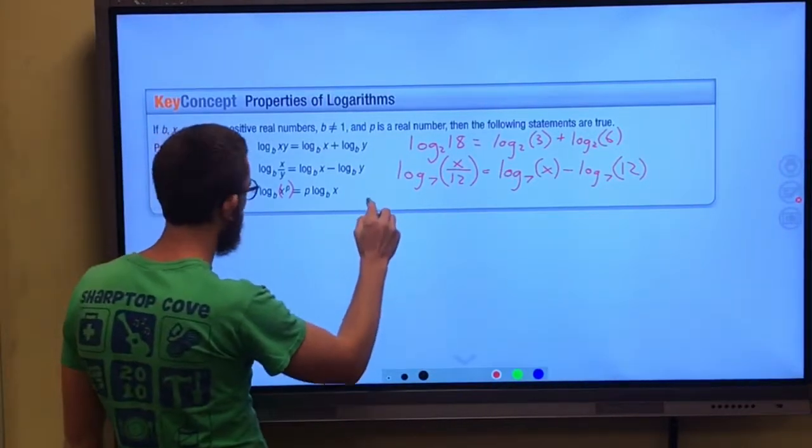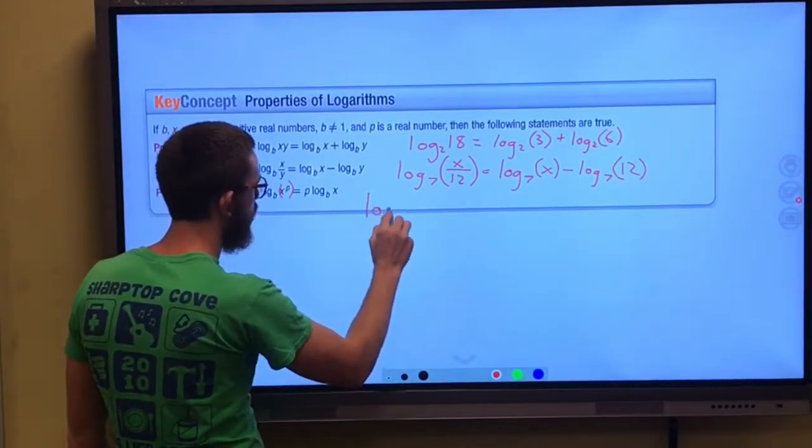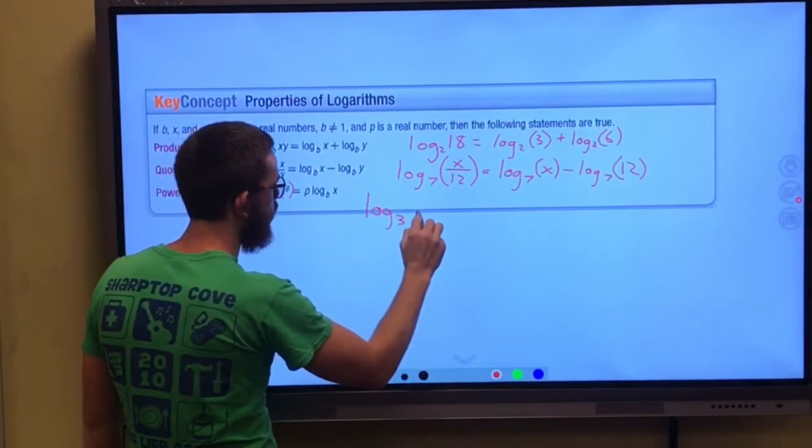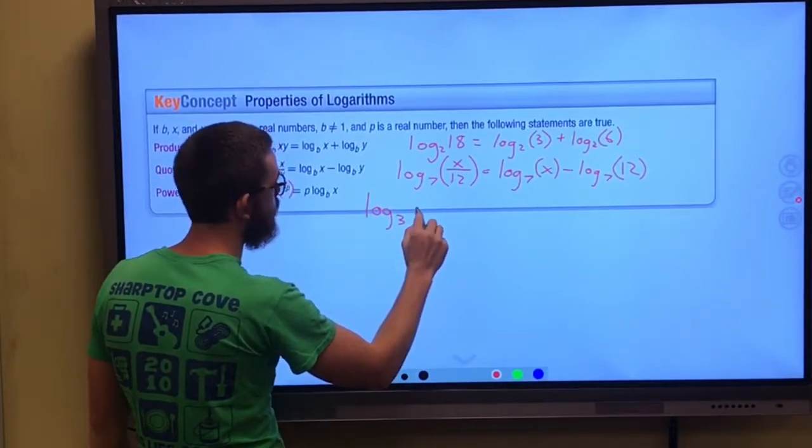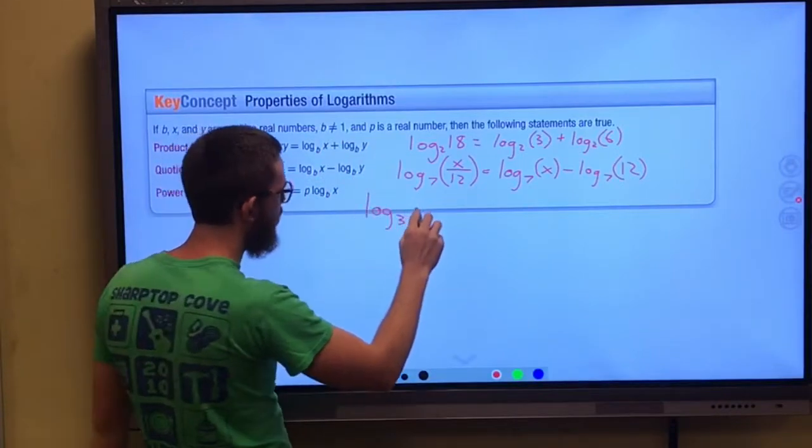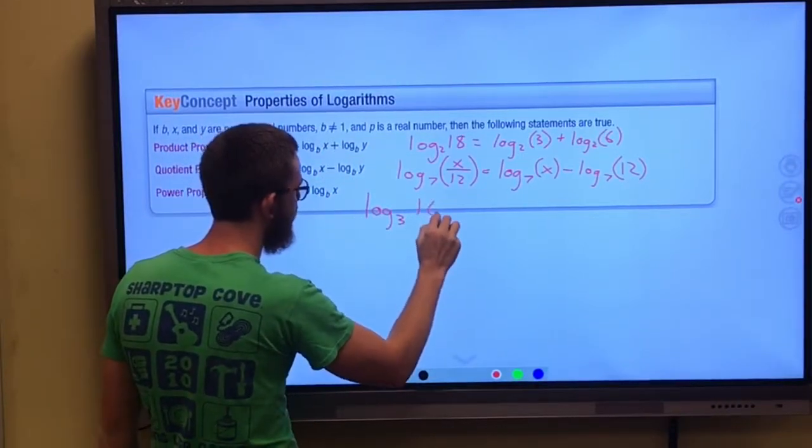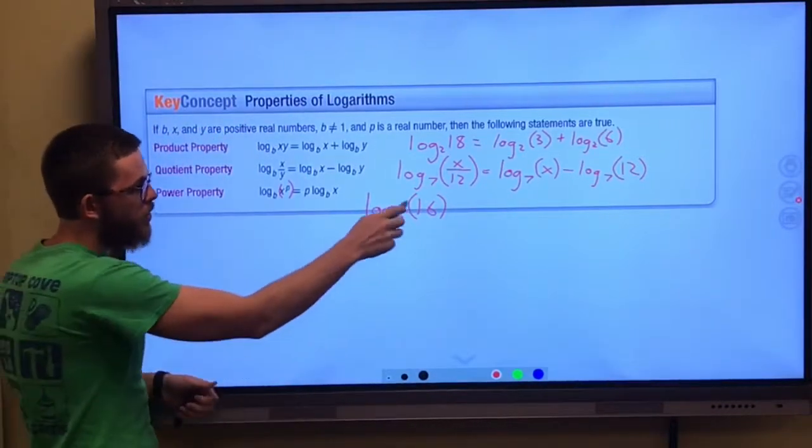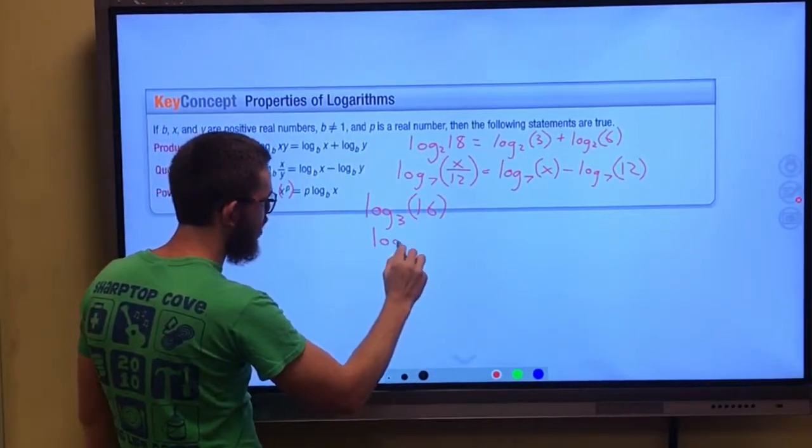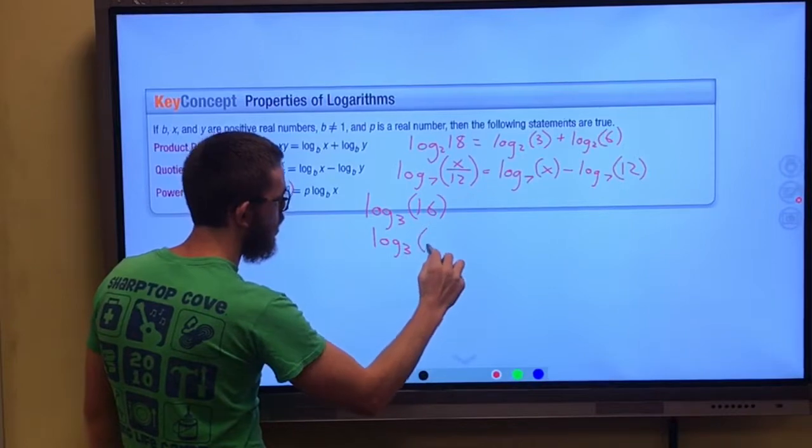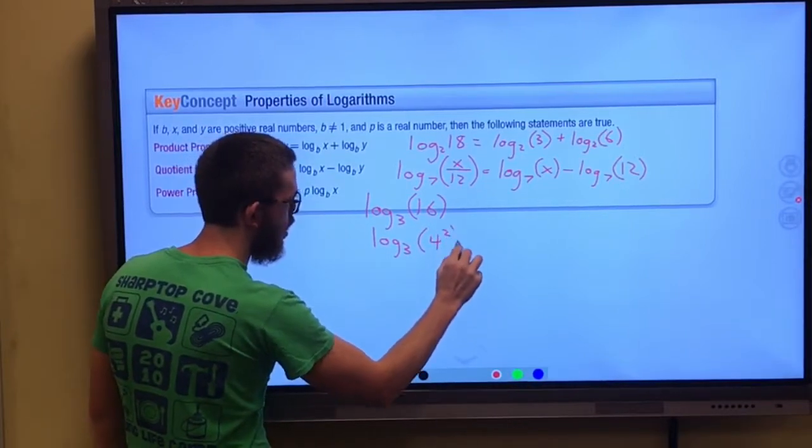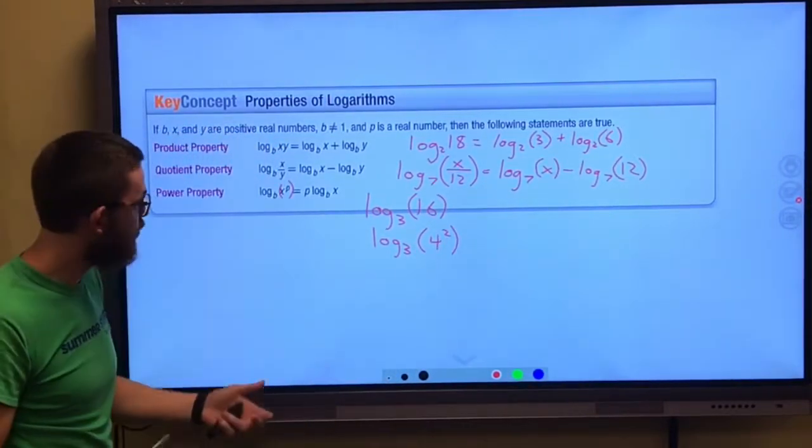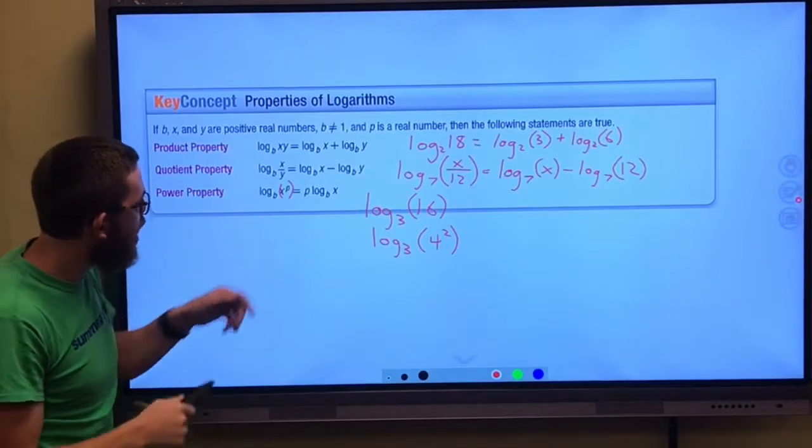So here's an example for you. Log base 3 of, what do we want? Let's do something unusual. 16. How about that? Now I'm going to rewrite 16 so it's expressed as an exponent, like 4 squared. Well, notice what happens to that exponent. That p goes out front.